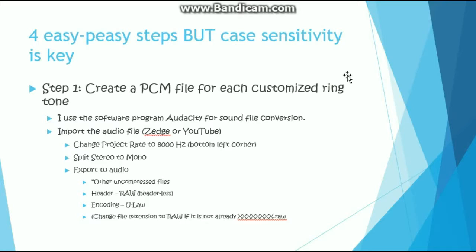The first step when you want to push a custom ringtone to your phones is you need to convert it into a specific file — it is going to be a .raw file. If you go on Cisco's website and try to figure out how to do this, they just give you the settings on how this file needs to look. They say just use any type of sound file conversion software. I found a program called Audacity and this is what I'm going to be using.